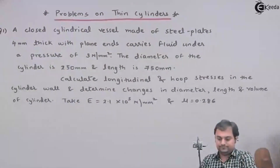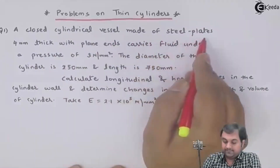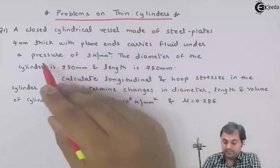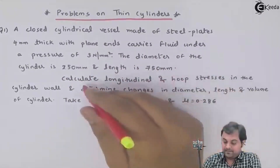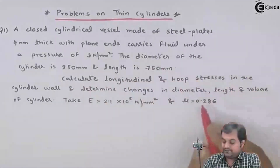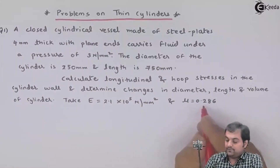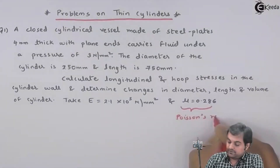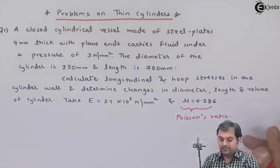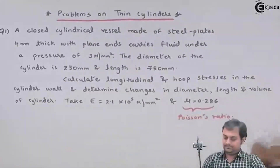Here is my first question under the heading 'Problems on thin cylinders.' A closed cylindrical vessel made of steel plates 4 mm thick with plain ends carries fluid under a pressure of 3 Newton per mm squared. The diameter of the cylinder is 250 mm and length is 750 mm. Calculate longitudinal and hoop stresses in the cylinder wall, and determine the changes in diameter, length, and volume of the cylinder. Take Young's modulus as 2.1 × 10⁵ Newton per mm squared and mu (Poisson's ratio) equal to 0.286.